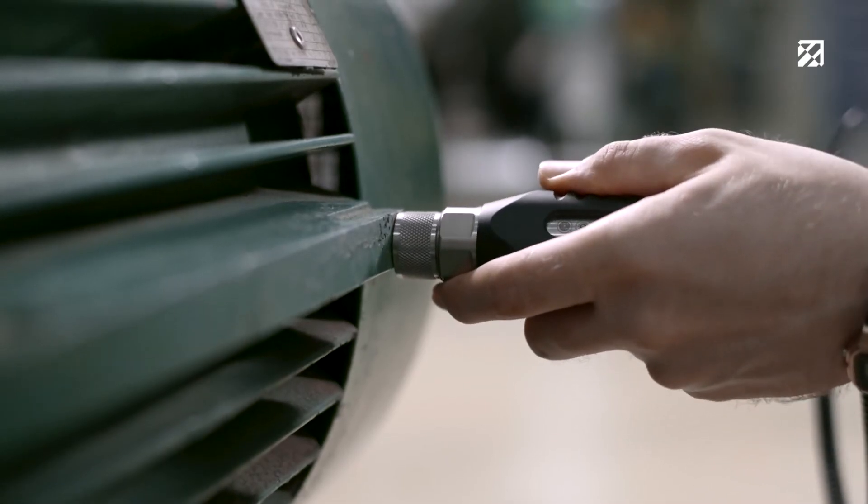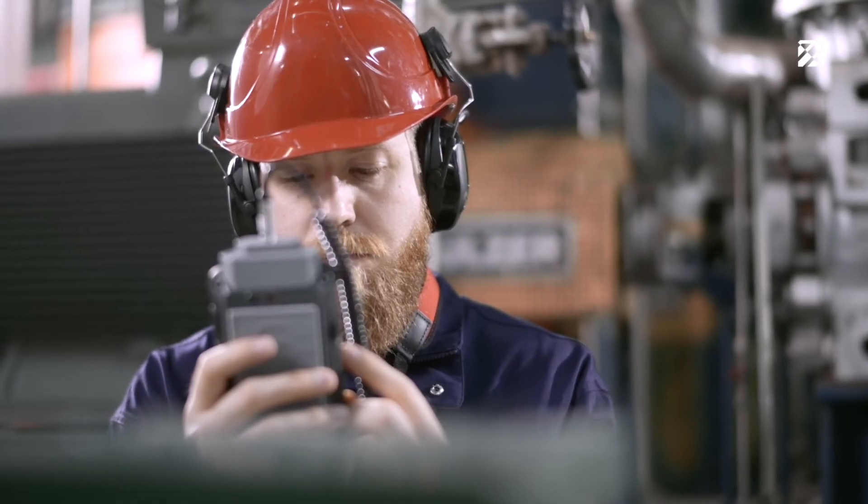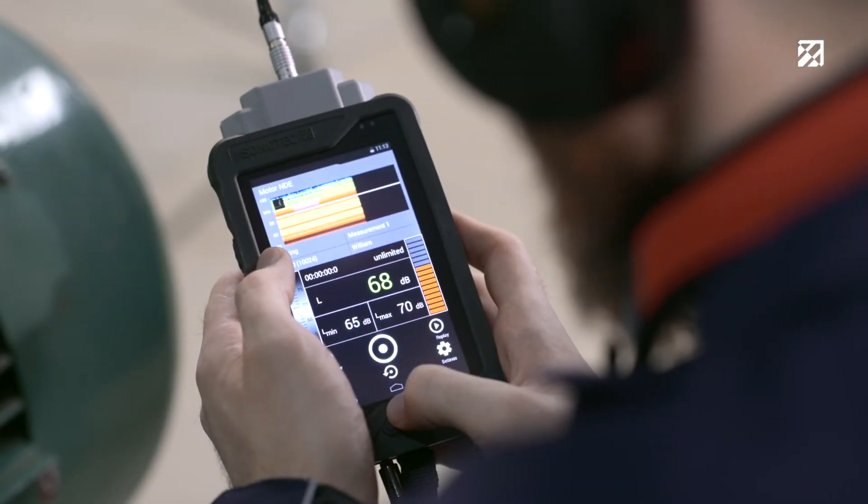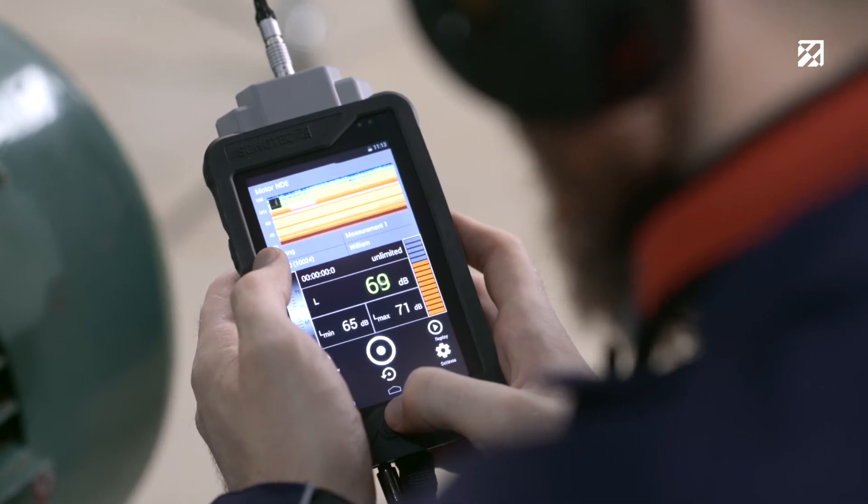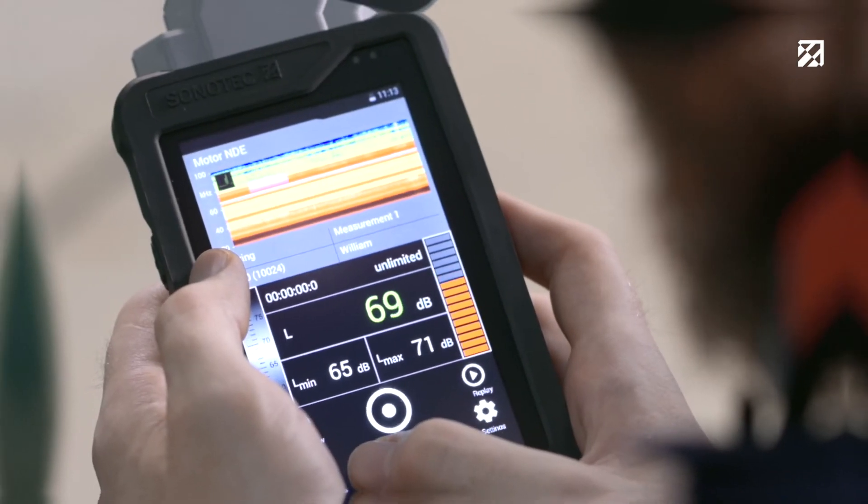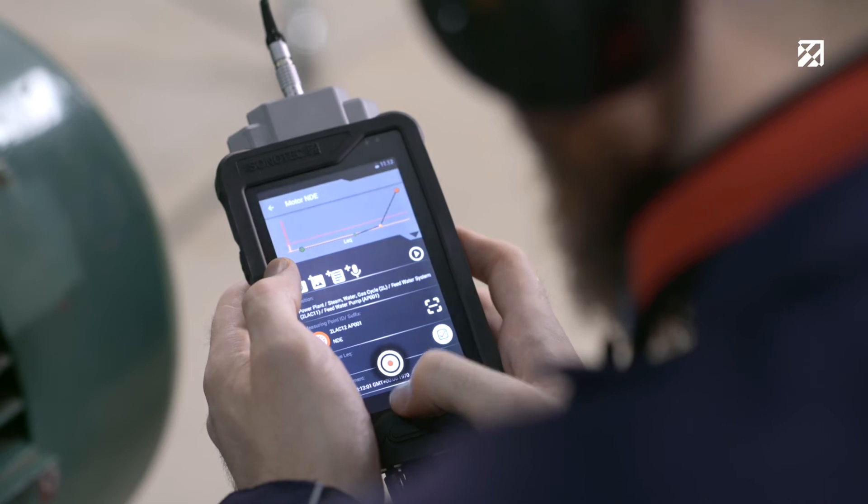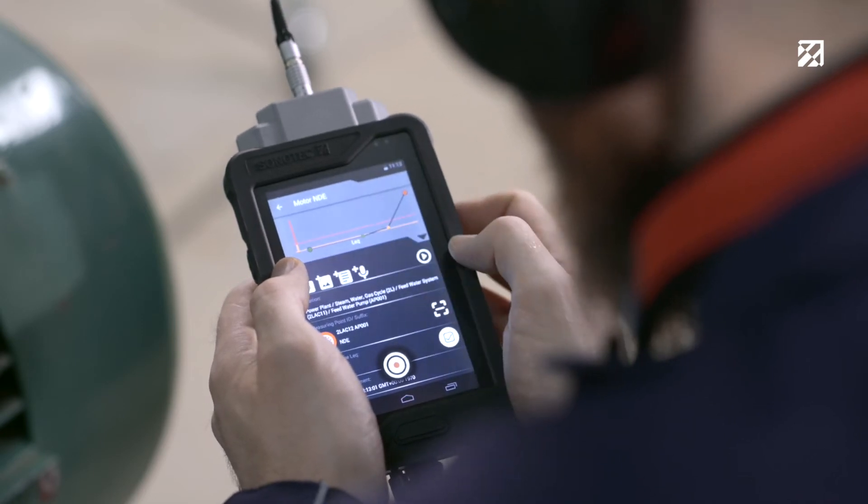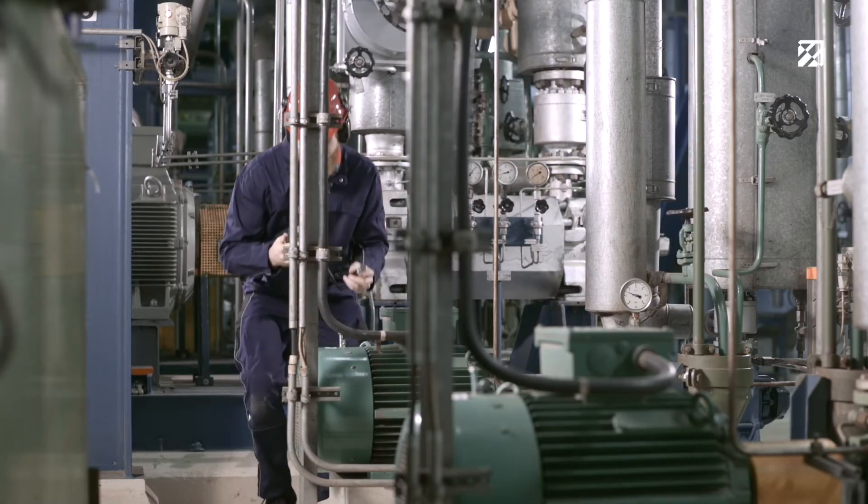The BS40 ultrasonic sensor is coupled with a flat magnet to record the ultrasonic signal. Start the measurement. When comparing with previous tests, the maintenance technician immediately notices on-site that the level values have changed significantly. Make a note of it and add a photo.